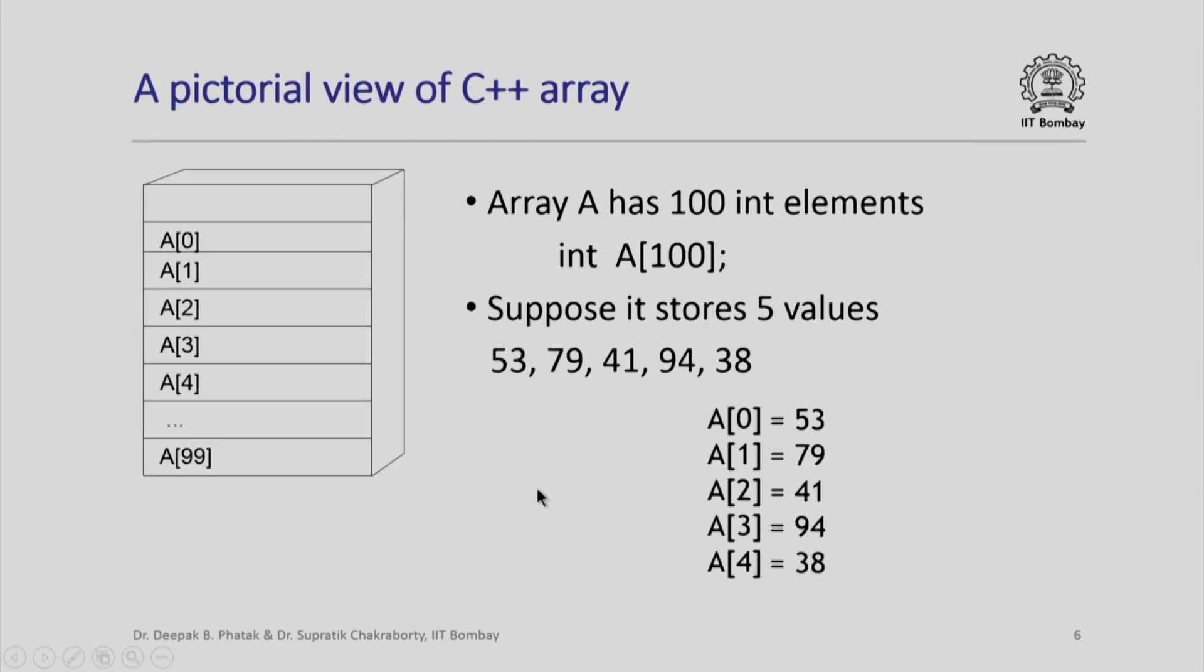This is pictorially represented here. If I declare an array a as int a[100], then it would be allocated consecutive memory locations, but the very beginning element will be a[0], then a[1], a[2], a[3], etcetera. Suppose the array stores 5 values in its first 5 locations, then effectively it means that a[0] contains 53, a[1] contains 79, etcetera.